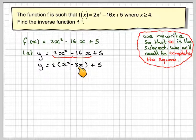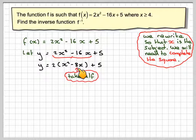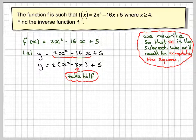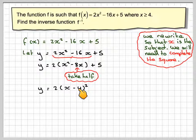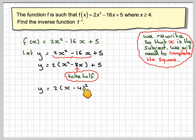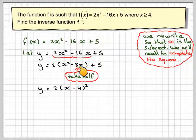Then we look at this number here and take half. Half of -8 is -4. We rewrite this as 2(x - 4)² — notice there's no longer an x term here. Because if you were to expand (x - 4)², you're going to get x² - 8x + 16.